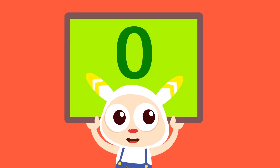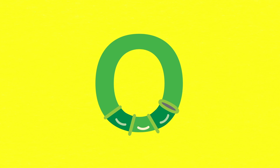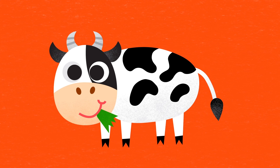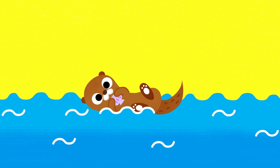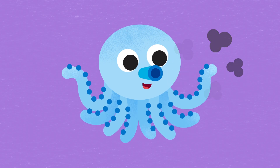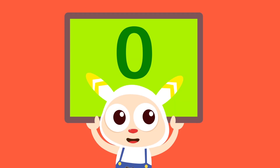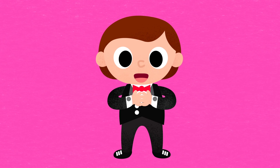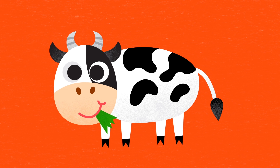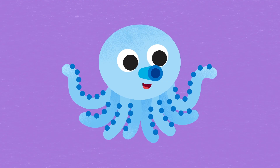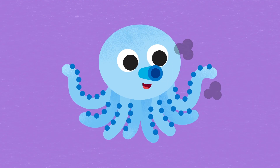What, what? Start with O. Can you tell me what? O! Opera, Ostrich, Ox, Otter, Octopus. What, what? Start with O. Can you tell me what? O! Opera, Ostrich, Ox, Otter, Octopus.